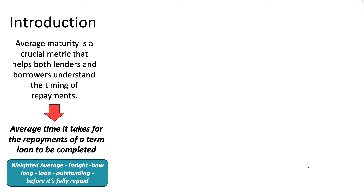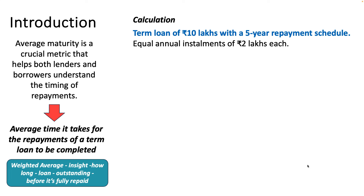Let's understand this better with an example. There is a term loan of 10 lakhs with a five-year repayment schedule and the repayment structure is equal annual installments of rupees 2 lakh each — that is, every year 2 lakhs. So the repayment structure is: Year 1, 2, 3, 4, 5 — each year repayment is 2 lakhs, so the total is 10 lakhs.